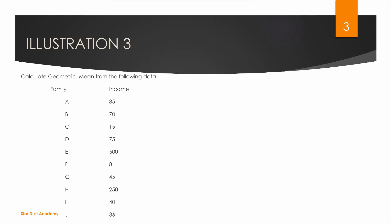Now we have a question: calculate the geometric mean from the following data. We have families with income. Family A: 85, Family B: 70, Family C: 15, Family D: 75, Family E: 500, Family F: 80, Family G: 45, Family H: 250, Family I: 40, Family J: 36.